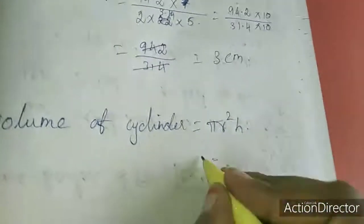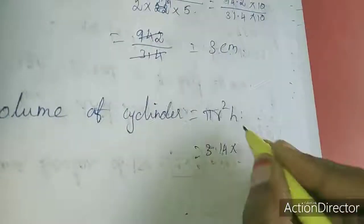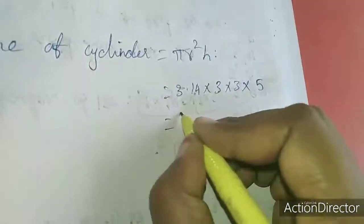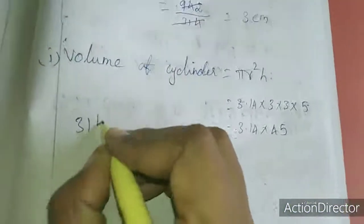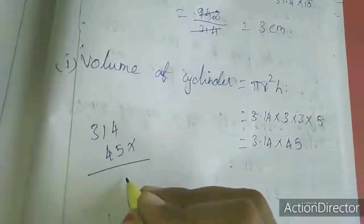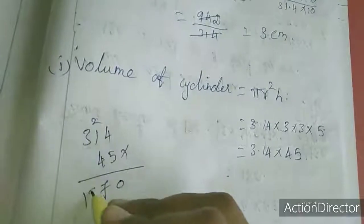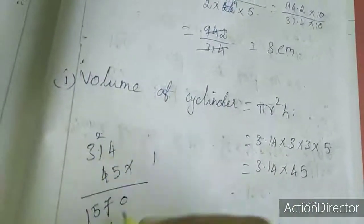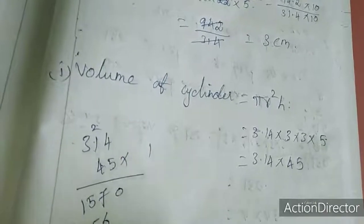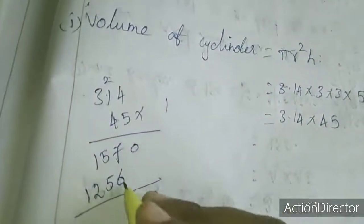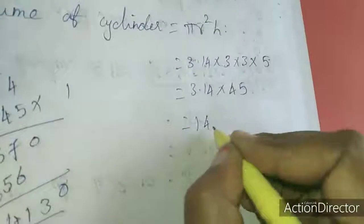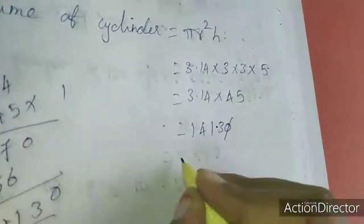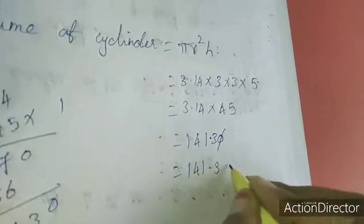Now finding the volume: 3.14 times r squared times h, so 3.14 times 3 times 3 times 5. That's 3.14 times 45. Calculating: this equals 141.3 cubic centimeters.